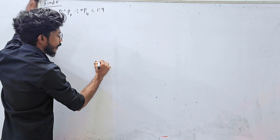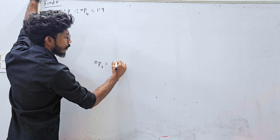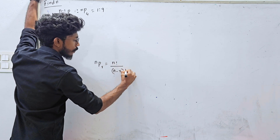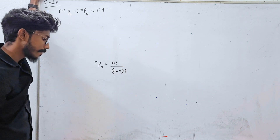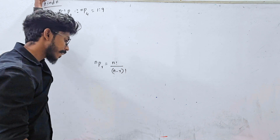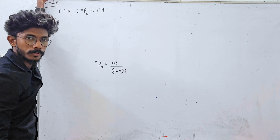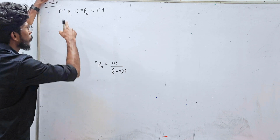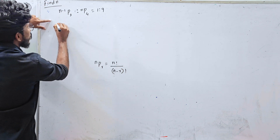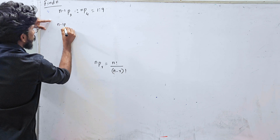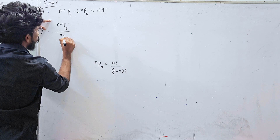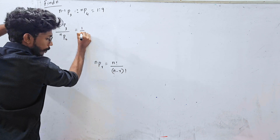In order to write it, the formula of NPR is n factorial divided by n-r factorial. We will find a solution. n-1P3 divided by nP4 is equal to 1 by 9.